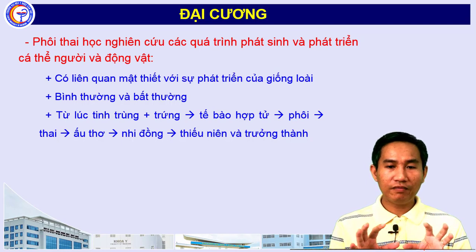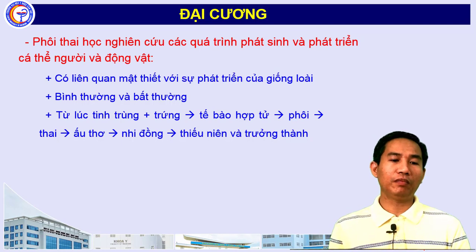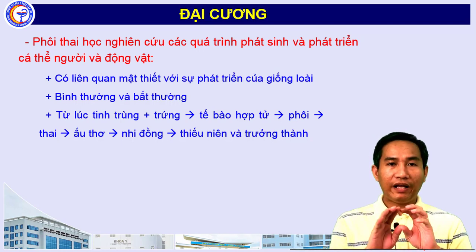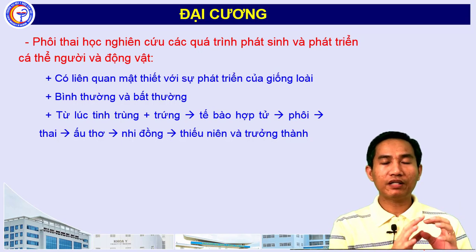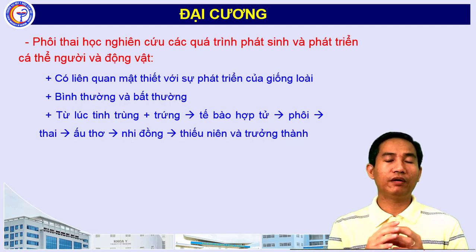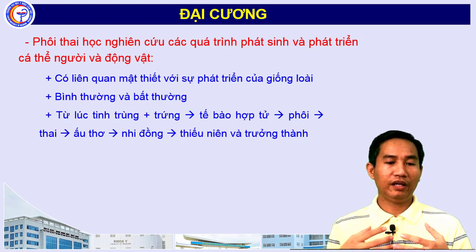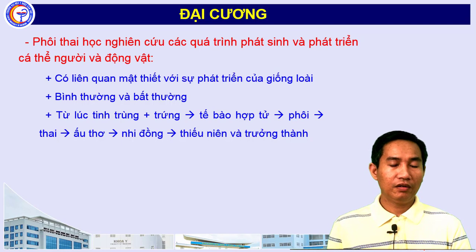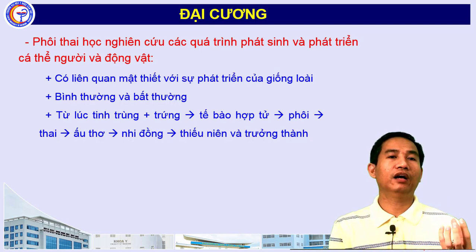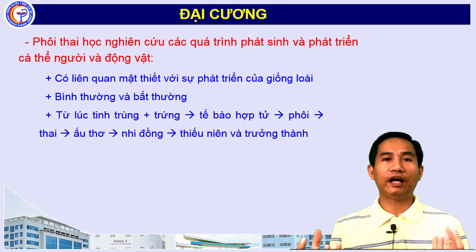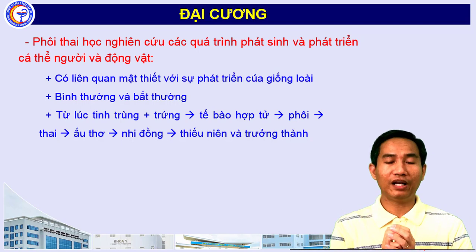Quá trình phát sinh và phát triển cá thể luôn gắn liền và liên quan mật thiết với sự phát triển của giống loài. Chúng ta nghiên cứu quá trình phát sinh phát triển bình thường và bất thường, tức là những rối loạn, những dị tật. Quá trình nghiên cứu bắt đầu từ sự hình thành tinh trùng cũng như sự hình thành trứng.